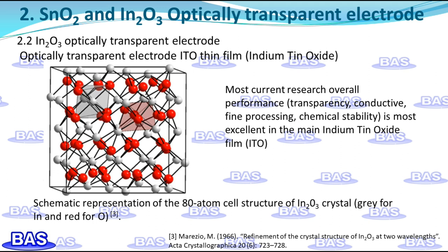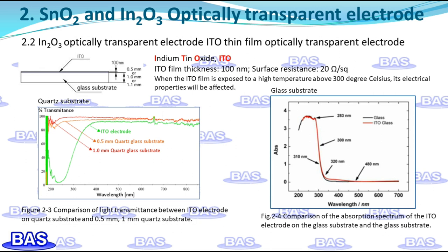Doping tin, molybdenum, antimony, and other elements can obtain N-type indium oxide film materials with better electrical properties, which can significantly increase the conductivity of indium oxide films and improve film performance. At present, the most researched ITO films are indium tin oxide films with excellent comprehensive performance in terms of transparency, electrical conductivity, fine processing, and chemical stability. Indium tin oxide films are widely used as transparent electrodes in optoelectronic devices, including liquid crystal displays, plasma display panels, and solar cells.